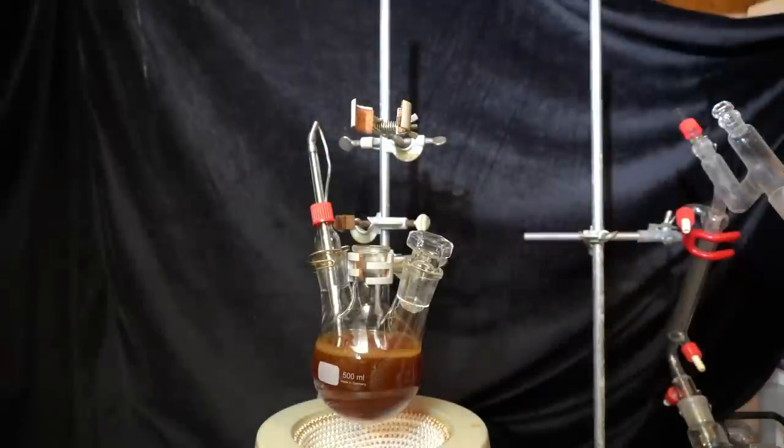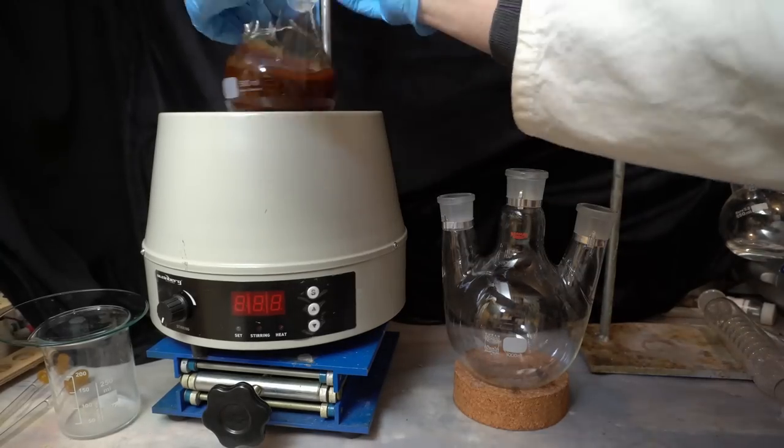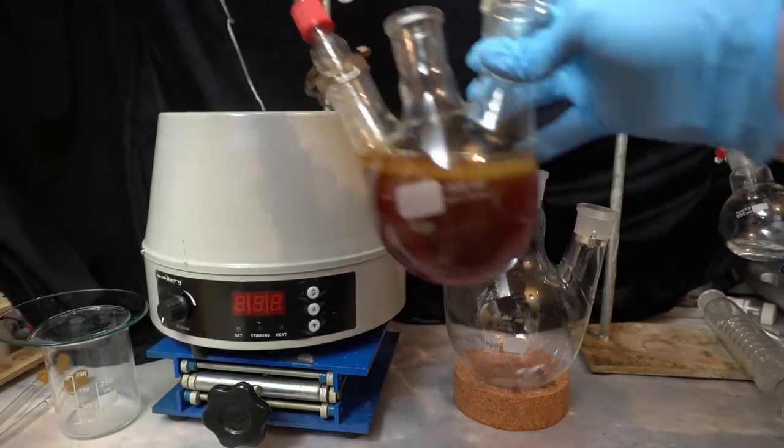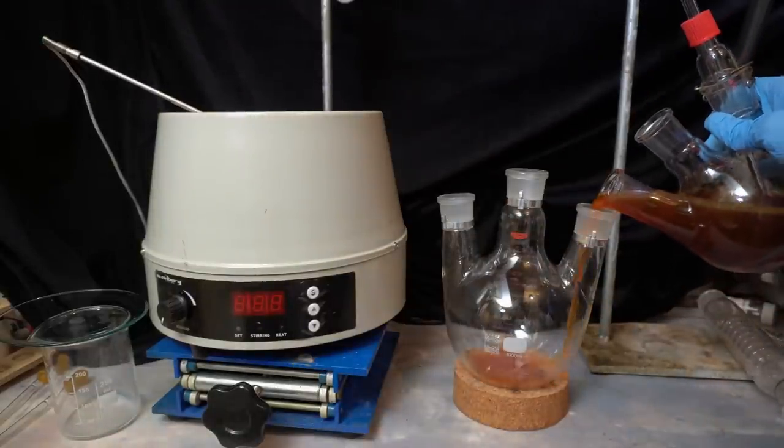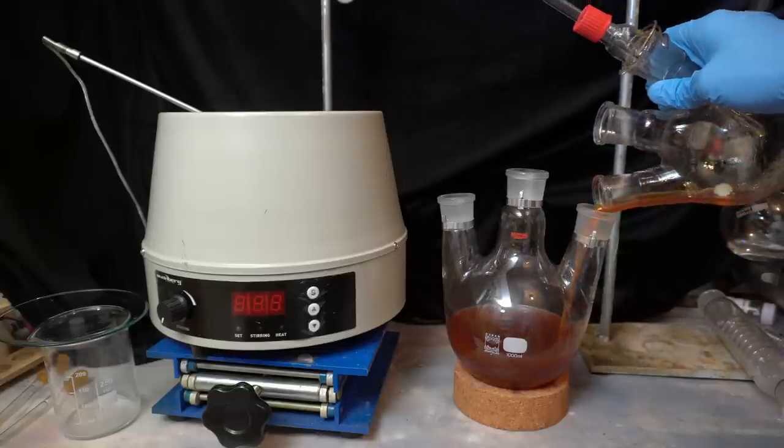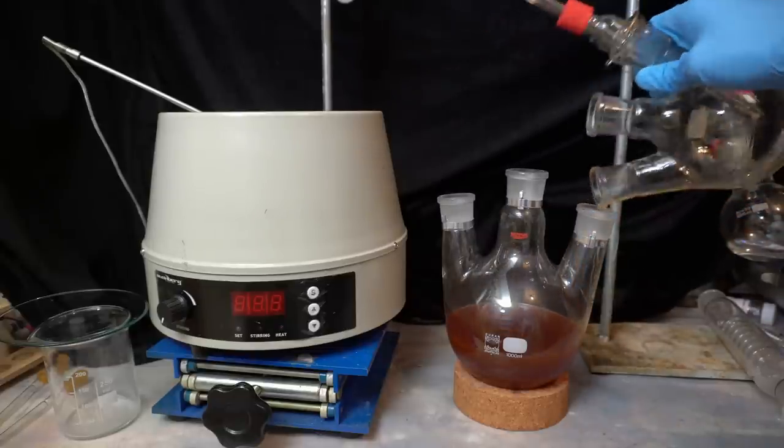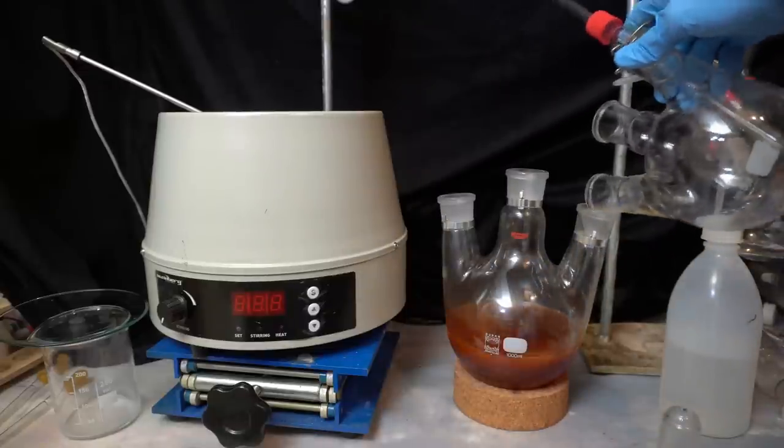However, the ethanolamine also co-distills with water. In order to prevent this I will neutralize the solution with hydrochloric acid. The ethanolamine is much more basic than the dimethylaniline so it will be converted into a salt at a pH around 7 where the dimethylaniline will still be free-based. And as a salt, ethanolamine will no longer distill over.